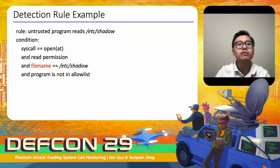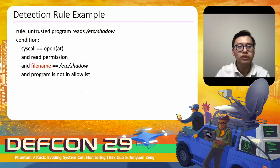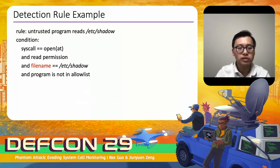Here is an example rule trying to detect untrusted programs reading /etc/shadow. The rule detects that there is an openat or open system call with read permission where the file name equals /etc/shadow, and the program is not in the allow list permitted to read /etc/shadow. This makes it obvious that the ability to precisely monitor system calls and related data is critical for detecting this attack.